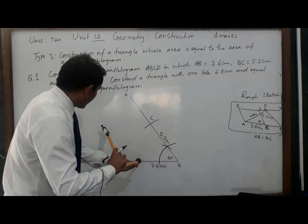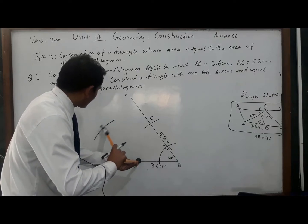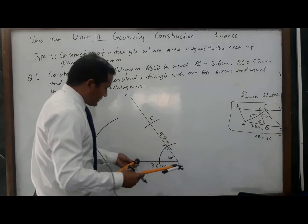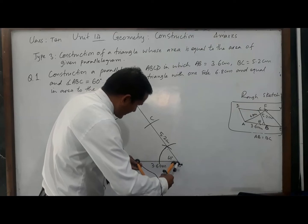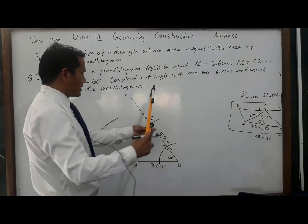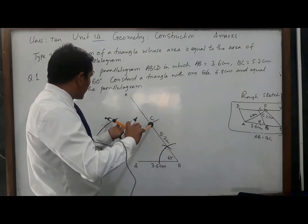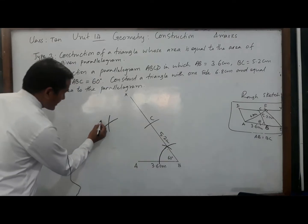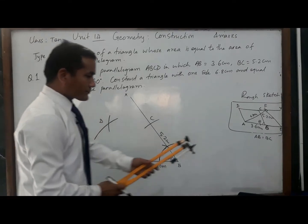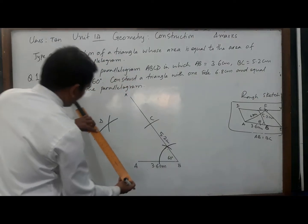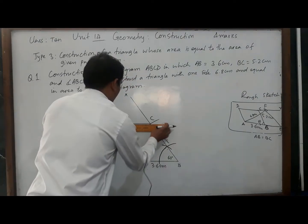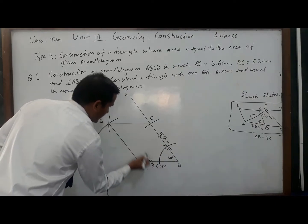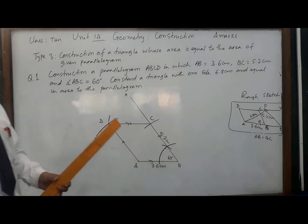Taking A as center, radius should be 5.2 centimeters, draw an arc. Taking C as center, radius should be the same as AB, that is 3.6 centimeters — cut the previous arc at D. Now join lines AD and DC. Here we got the parallelogram ABCD with the given measurements and the given angle.